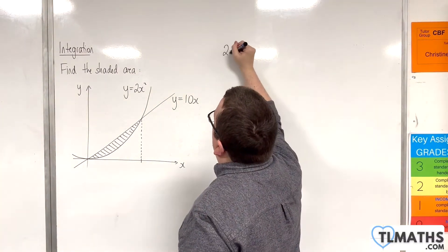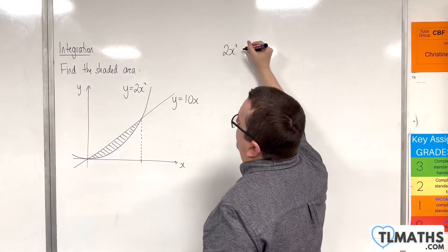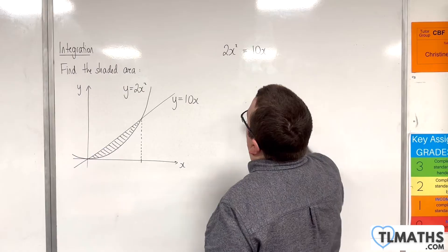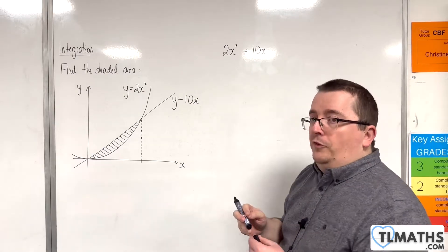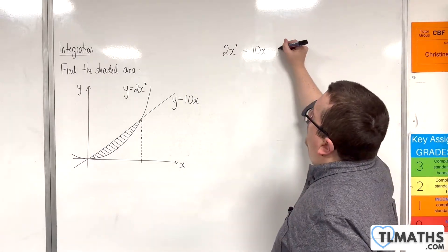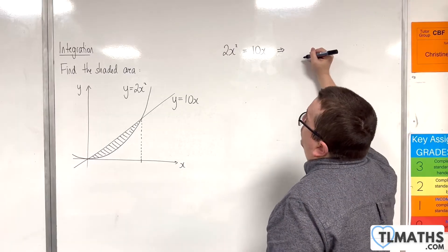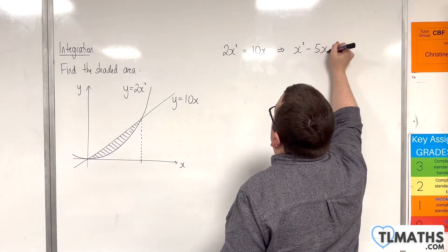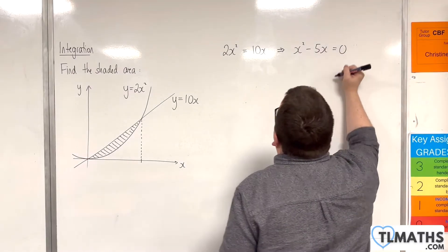So to do that, I'm going to put the curve, y equals 2x squared, equal to the line, y equals 10x. So 2x squared is equal to 10x. Now I'm going to divide through by 2 and move everything onto the left hand side. So I'm going to get x squared take away 5x is equal to 0.